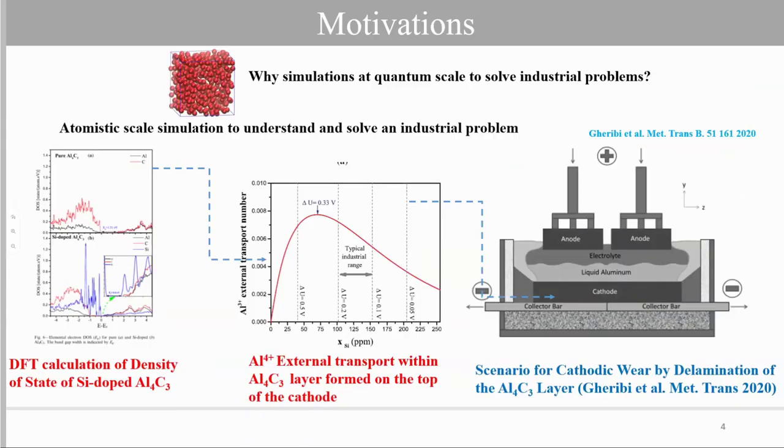The atomistic scale simulation can also be employed to understand and solve an industrial problem. In this example, in order to understand the wear of the cathode in the aluminum electrolysis cell, we have performed a series of density functional theory calculations to determine the electron density of state of Si-doped Al4C3 formed on the top of the cathode, and from which we have deduced the aluminum external transport numbers, which then allow us to build a scenario for the cathode wear by delamination of the Al4C3 layer. So the employ of atomic scale simulation is twofold: first and primary is to build databases, and second is to directly understand and solve an industrial problematic.